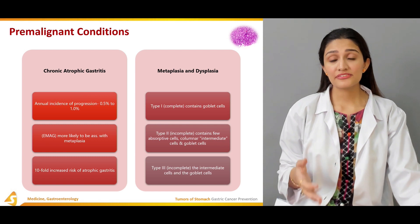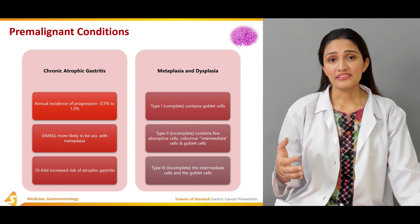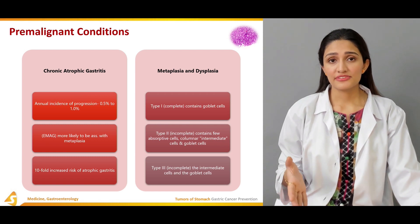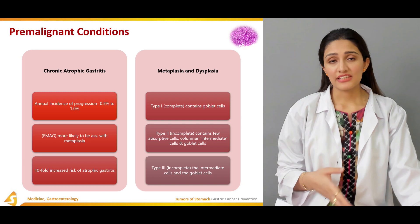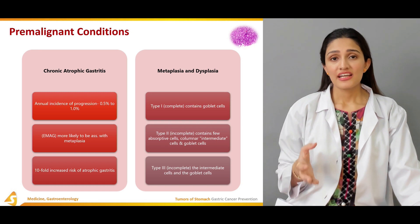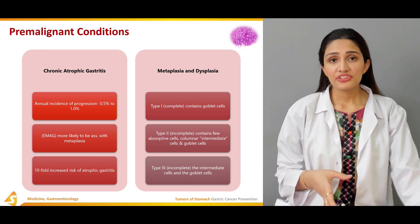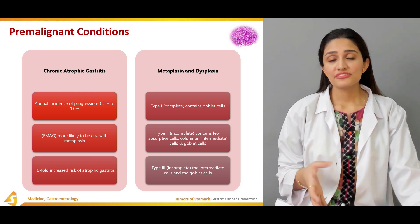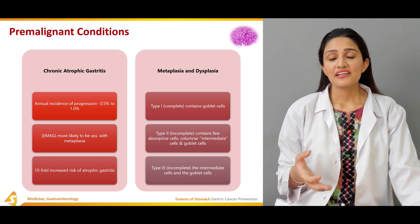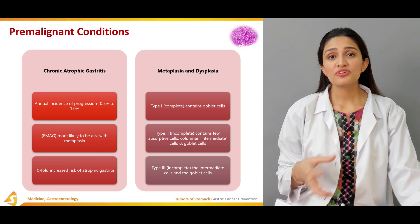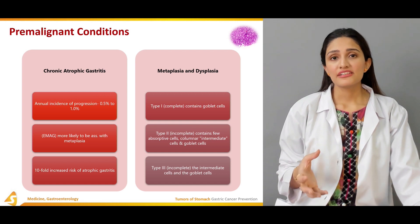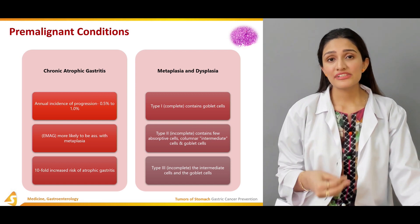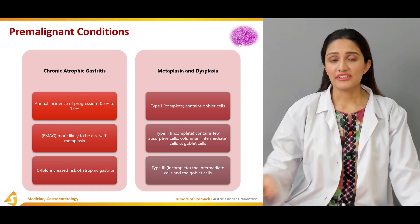Gastric ulcers have an increased risk of predisposing to gastric cancer. In contrast, duodenal ulcers have the opposite effect — they actually cause a decrease in gastric cancer risk.